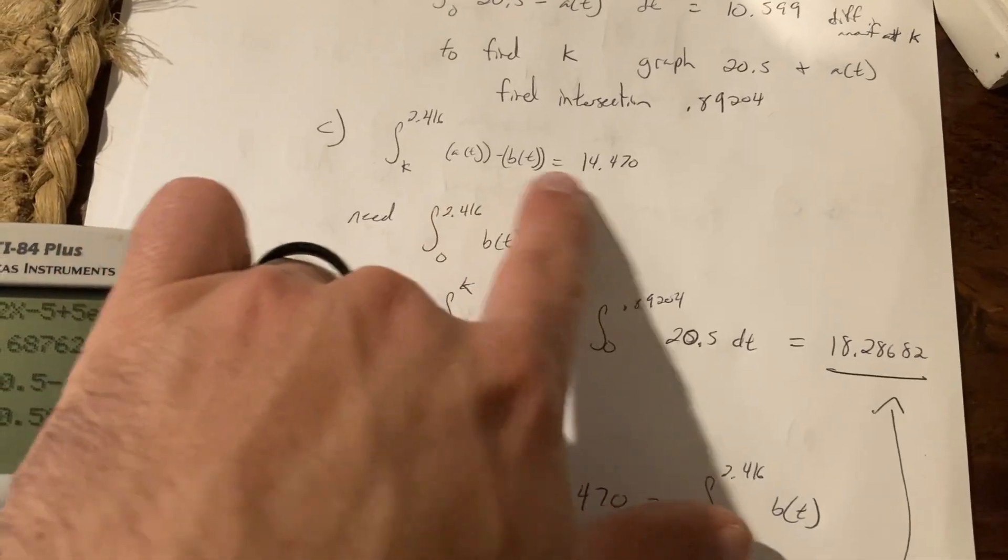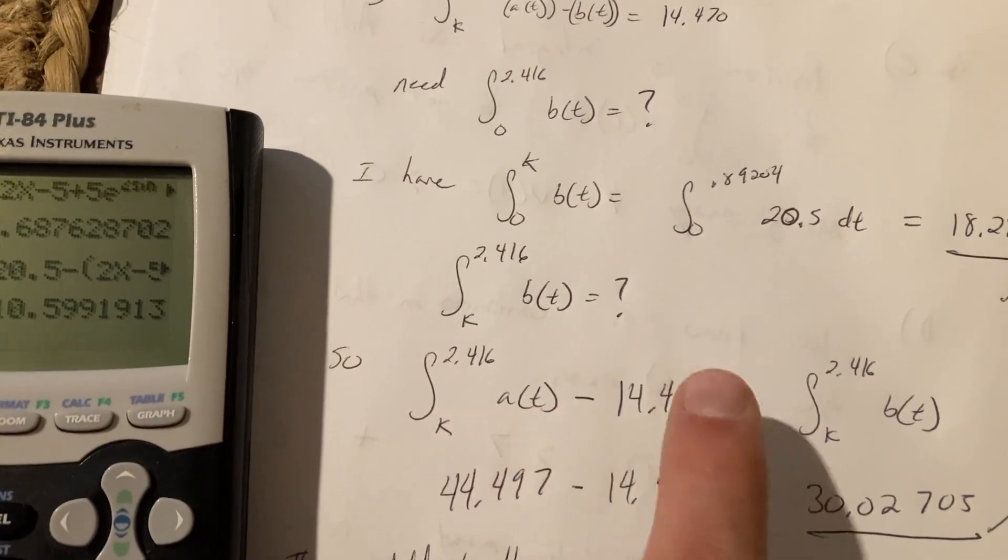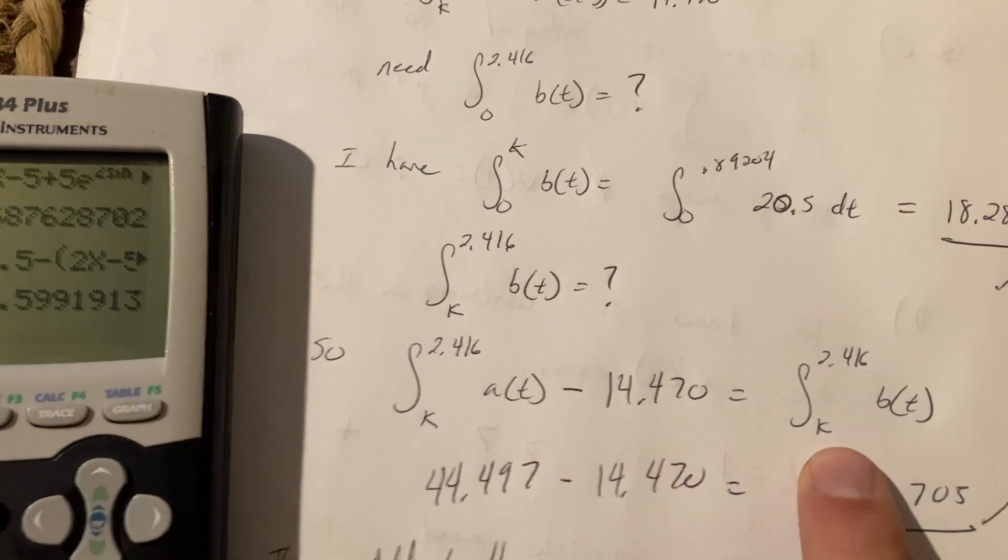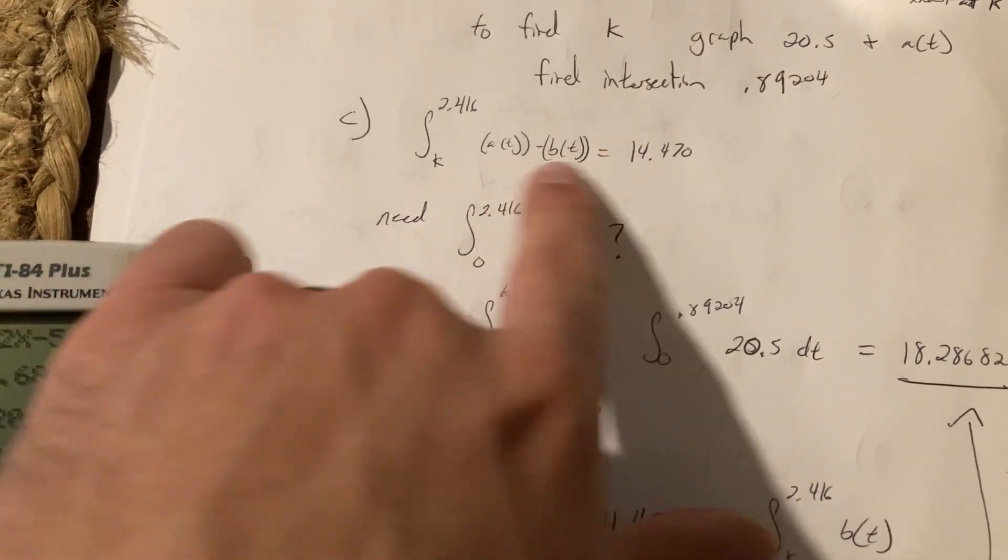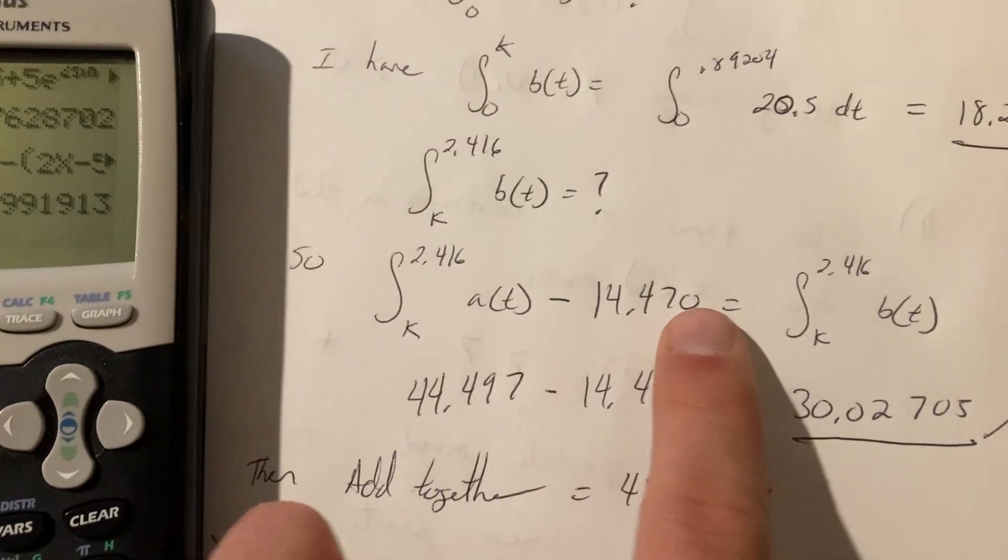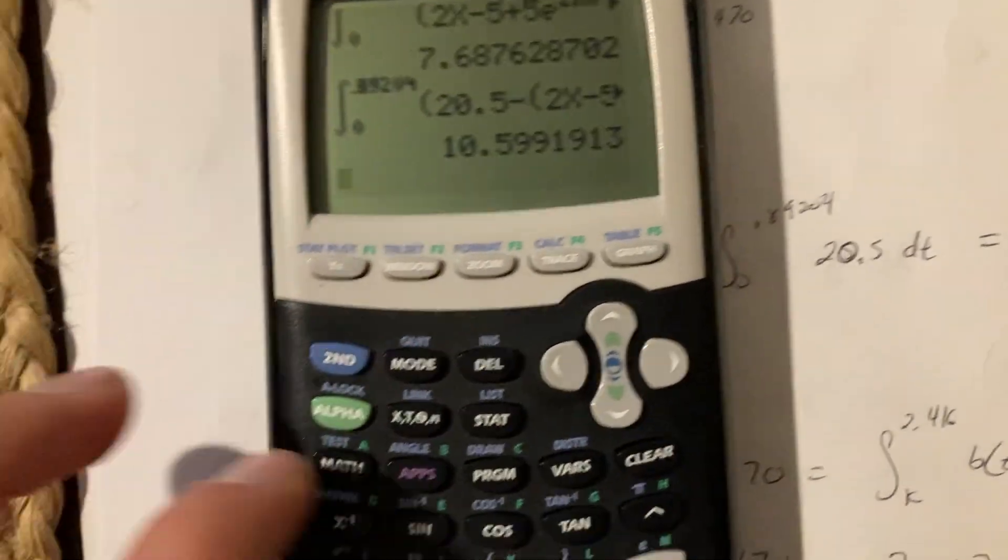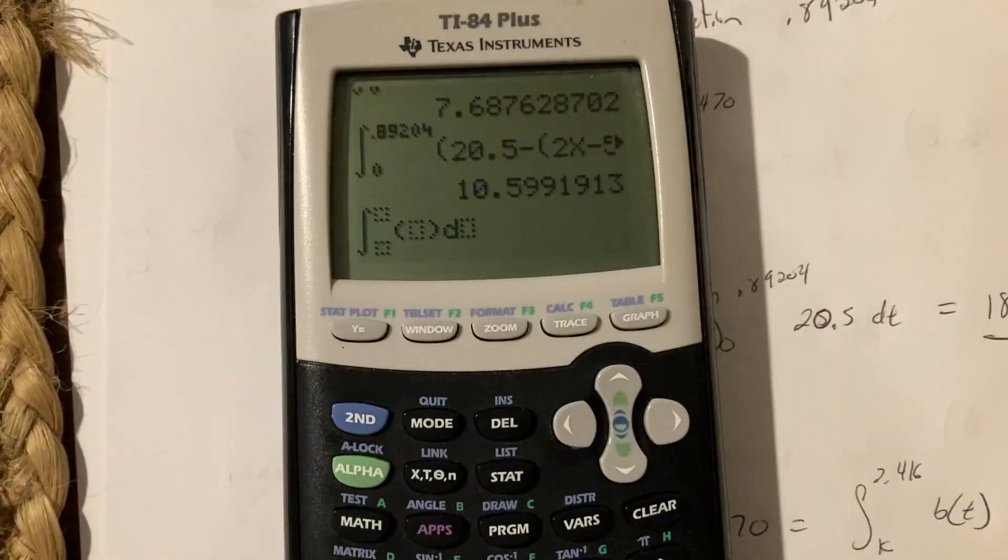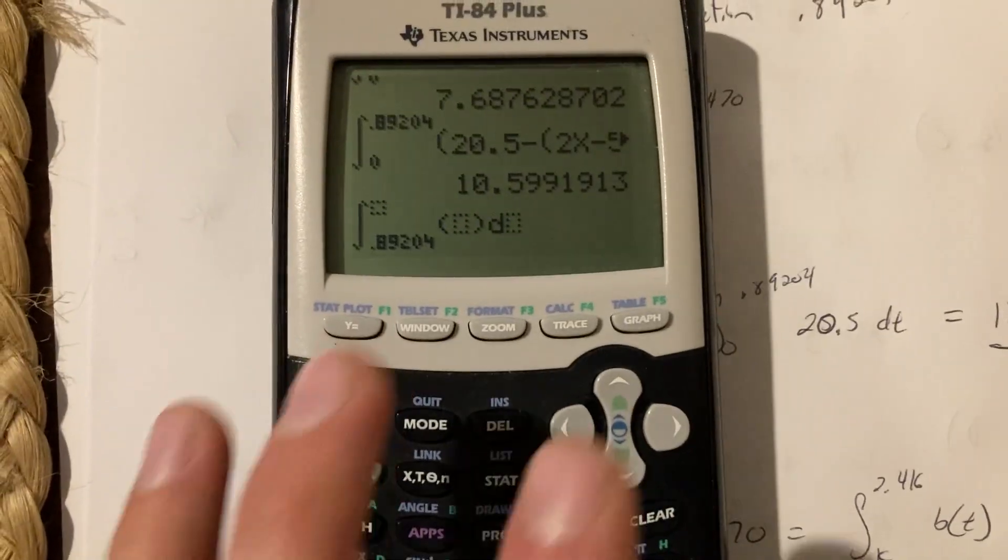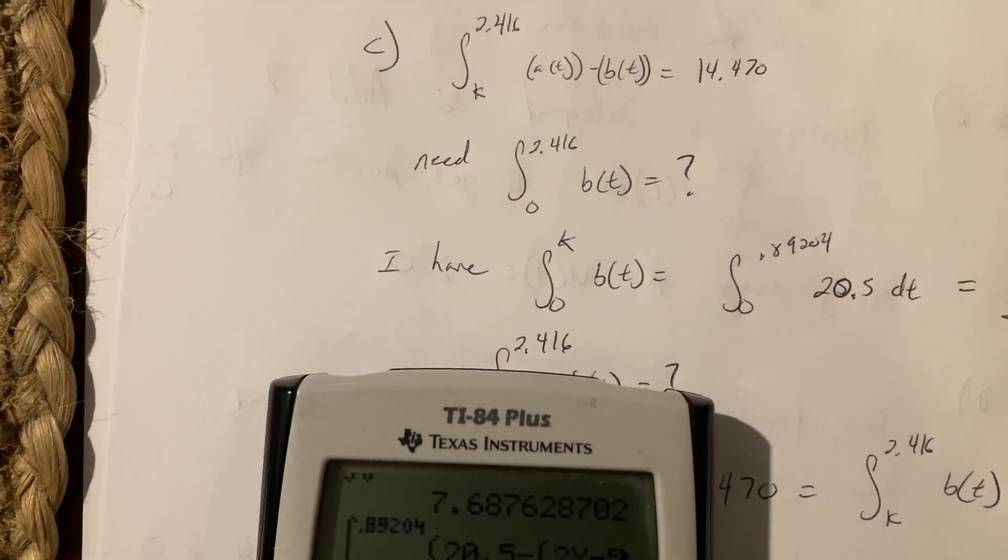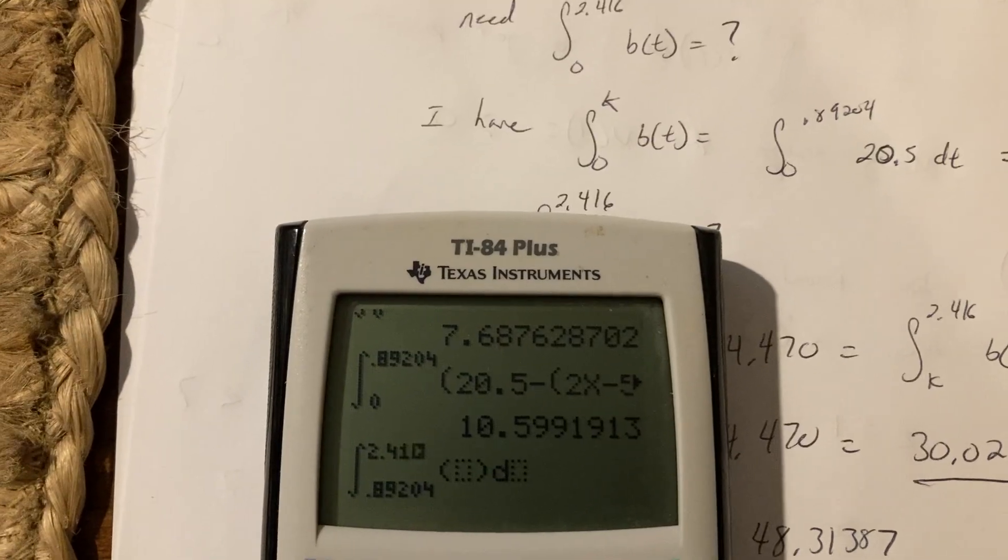This guy minus this guy is going to equal this very thing that I'm looking for, because that's what I was just given right up here. So the interval of this fella, here it is. Math 9, from 0.89204 to, now let me get it right, 2.416